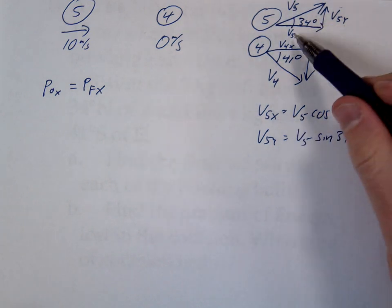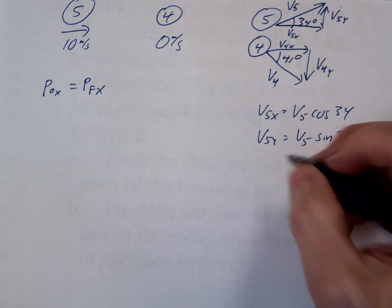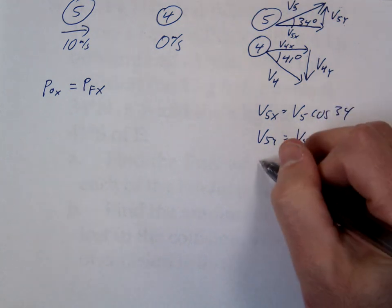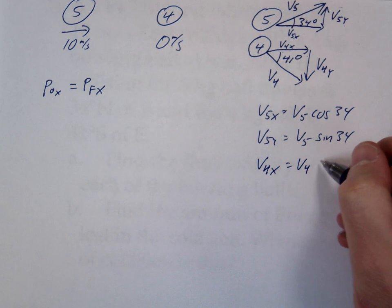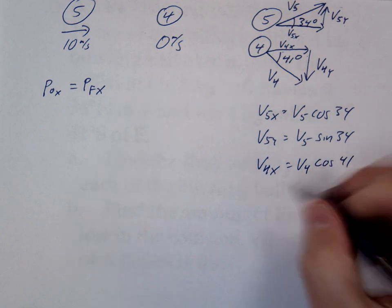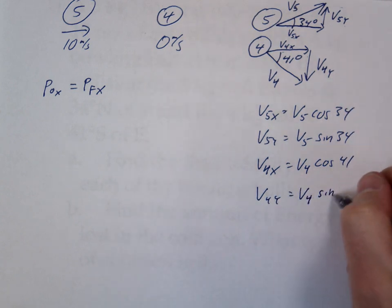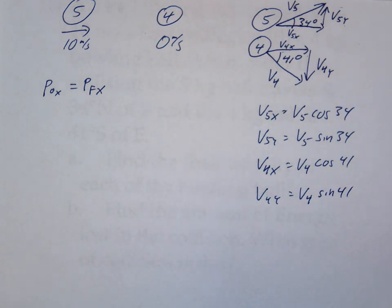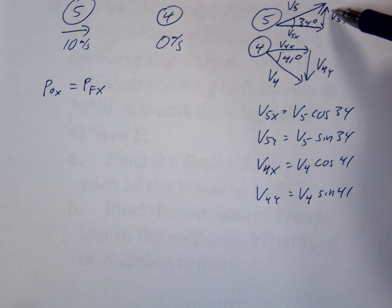So notice by doing that, we've just taken out two of our unknowns, and we only have one unknown now. We've eliminated one. We'll do the same thing with ball four. So V4x, this is the adjacent side. That's going to be V4 cosine 41. V4y, we're going to write that expression as V4 sine 41. Now, I just want to point out, you do want to make sure you recognize that this one is going up, and this one is going down. So at some point in the problem, you have to make that distinction between these two, whether calling this positive and this negative.